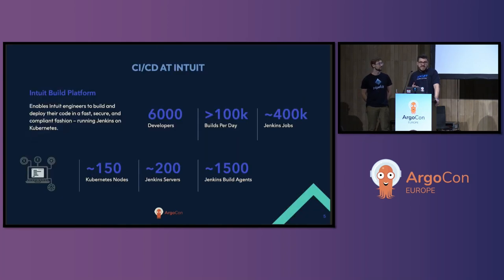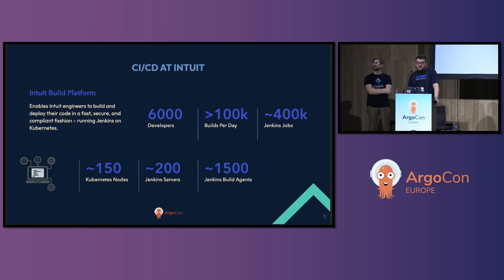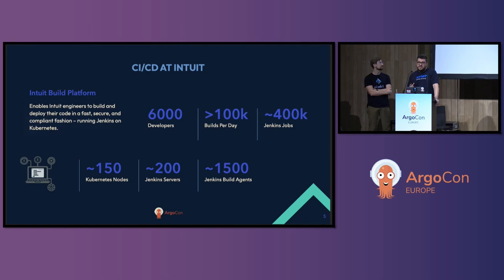A quick look at the CICD landscape at Intuit. We are serving about 6,000 developers, running 100,000 builds daily. In order to support this, we are running a Kubernetes cluster with about 150 nodes with 200 Jenkins controllers. And based on the load at a given point in time, we're ranging between 1,000 to 1,500 Jenkins build agents.